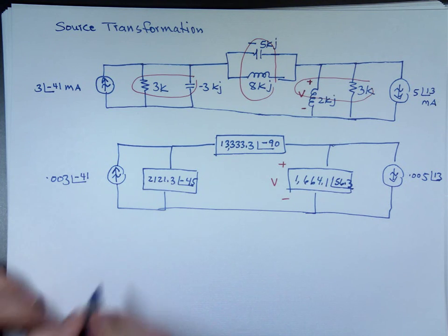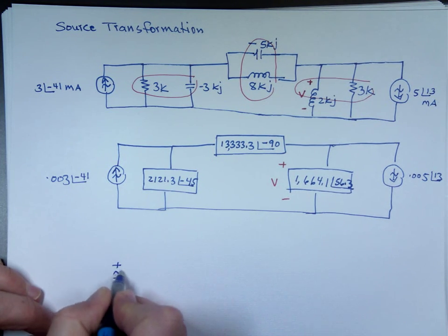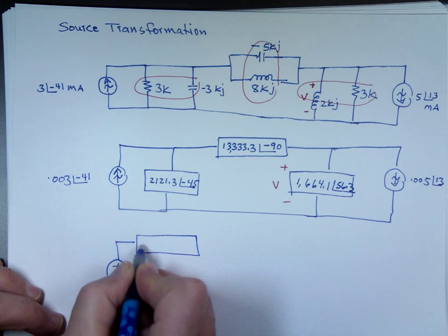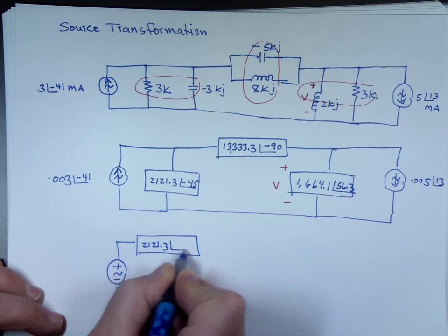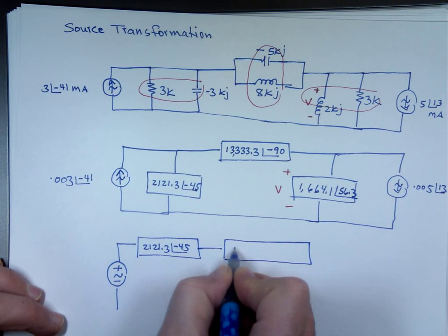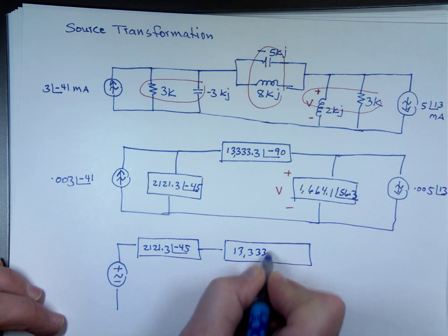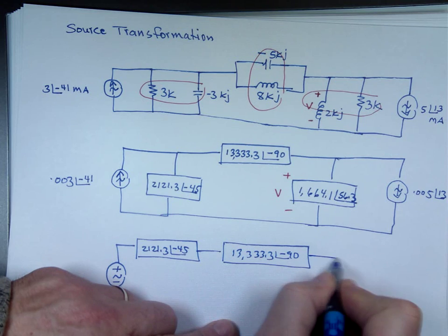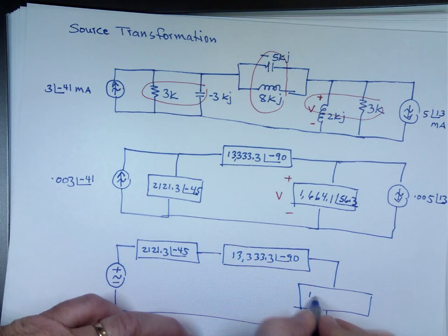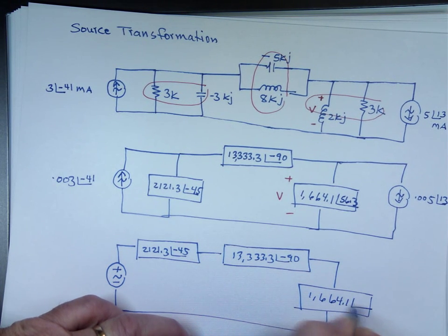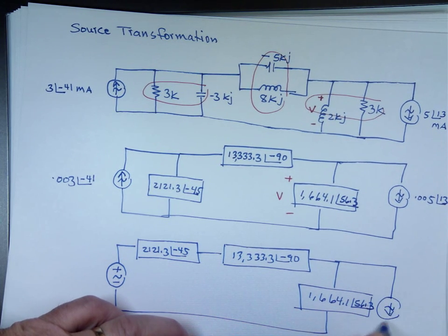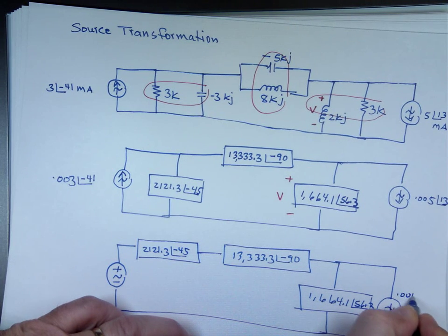I can do a source transformation, this becomes a voltage source on the top. You're going to have two of these, 2,121.3 angle negative 45, 13,333.3 angle negative 90. 1,664.1 angle 56.3, 0.005 angle 13.